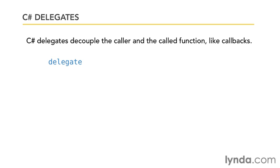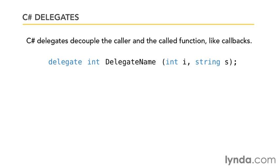To declare a delegate, you use the delegate keyword, and you're essentially defining a type of function that is going to be called. You provide the return type — in this case, an integer — then a name for the delegate, which can be any legal function name. Then you provide any parameters the delegate will handle. Here I'm declaring a delegate that returns an integer and takes two parameters: an integer and a string.